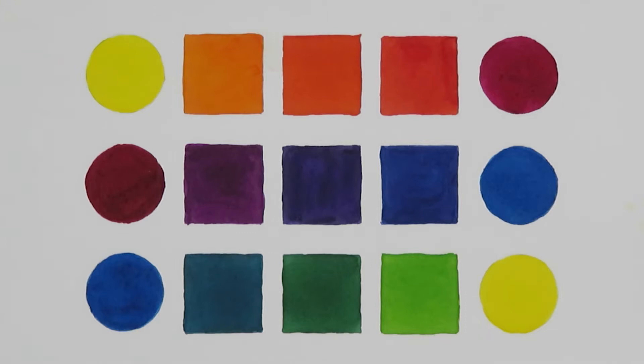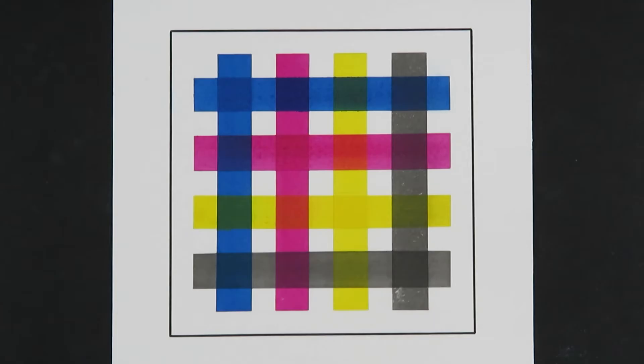There are two ways that you can use process colors to mix a secondary color. As shown here, you can mix colors using drops of ink. The other way to mix color is to layer the colors as shown in this illustration.